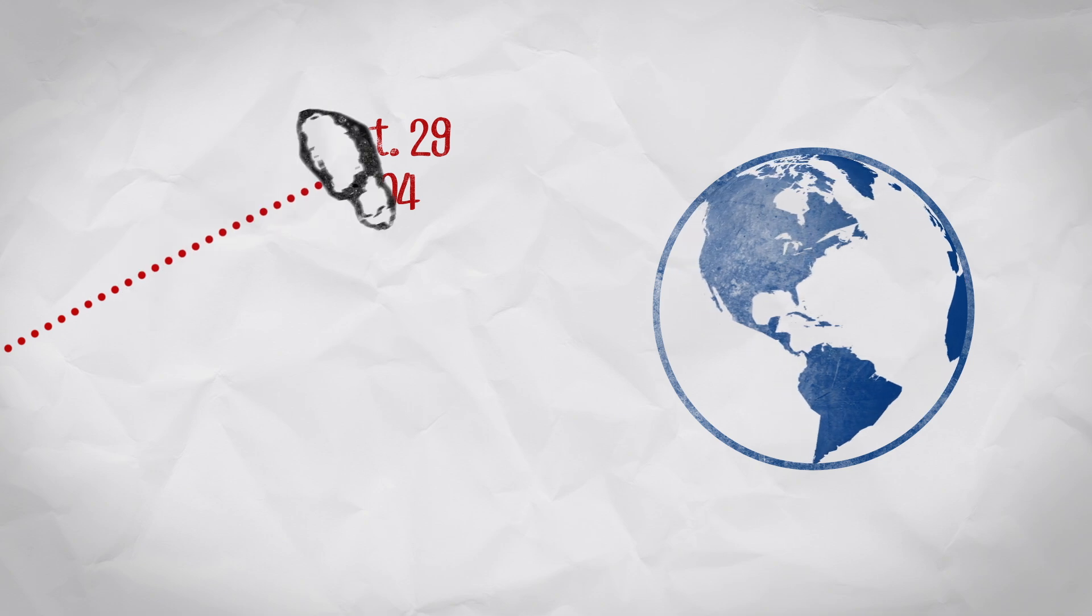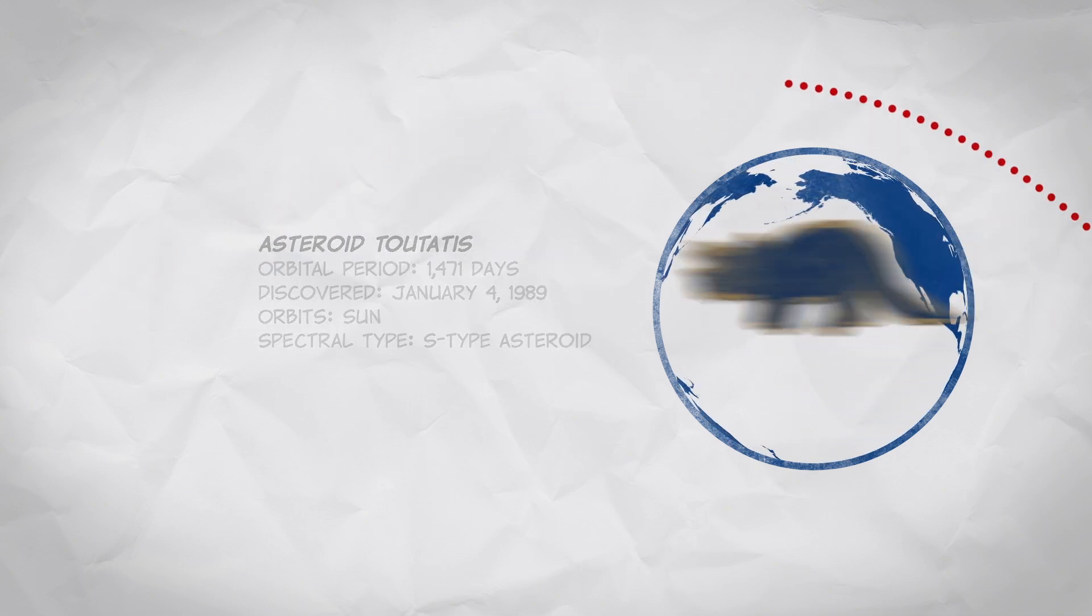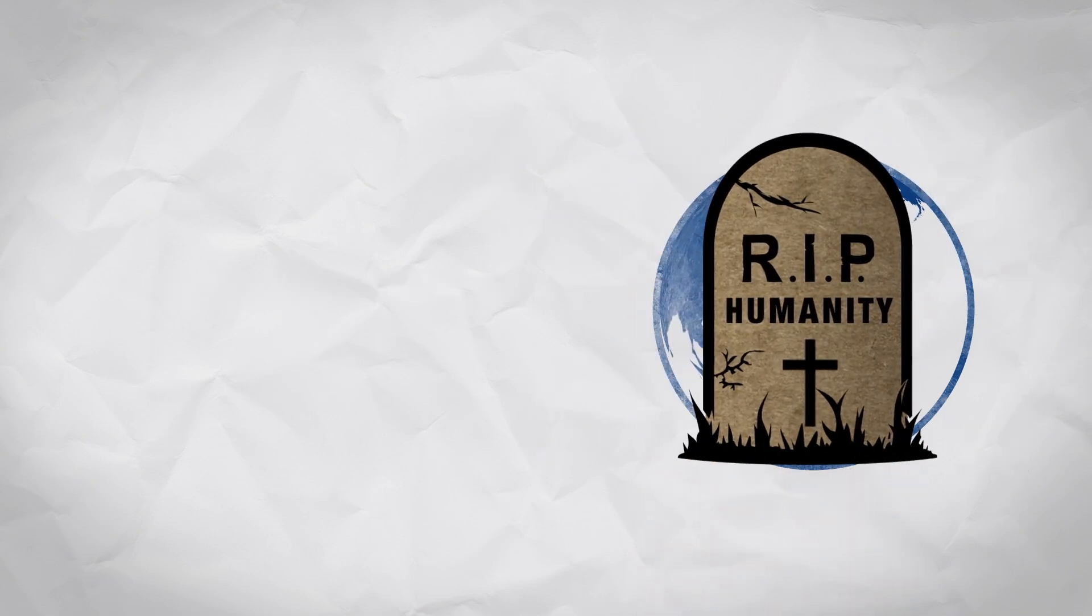The world nearly ended on September 29th, 2004. That's when the asteroid Tutatus narrowly missed the planet. An asteroid wiped out the dinosaurs, and it could end humanity as well.